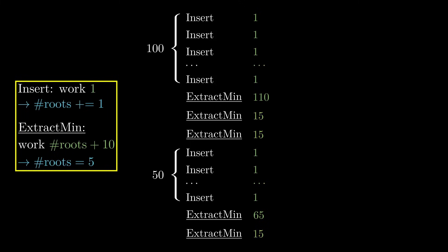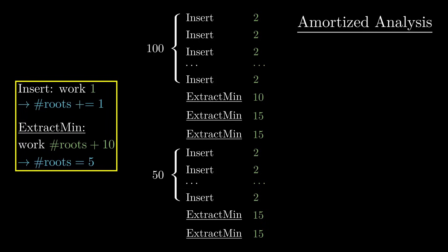Here's another way to look at it. What if we don't consider single operations, but the entire sequence as a whole? The first 100 inserts are directly responsible for the extra time of the next ExtractMin. Maybe we shouldn't attribute that extra time to the ExtractMin, but rather to the inserts, evenly distributing it among them. You can think of every insert paying in advance for the additional but constant work it will cause during the next ExtractMin. This kind of perspective shift is called amortized analysis, and it is key for understanding Fibonacci heaps.